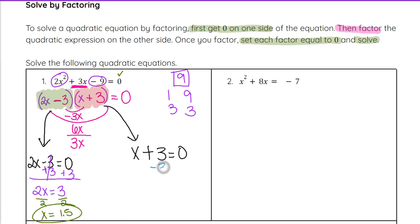And then on our other one, we subtract 3 from both sides, and that will isolate x right away. 0 minus 3 is negative 3. So, our solutions on this one will be 1.5 and negative 3, or 3 halves and negative 3, either way.